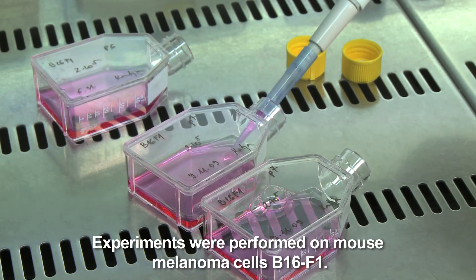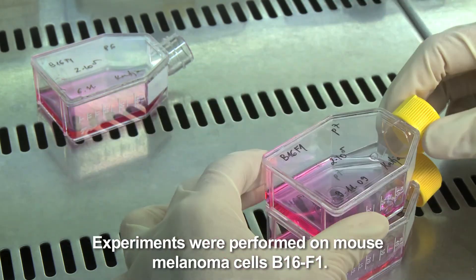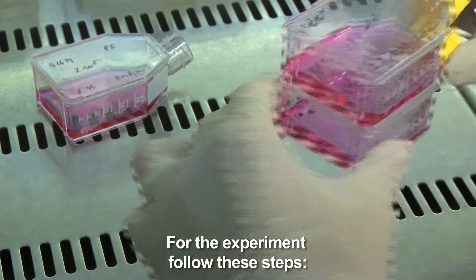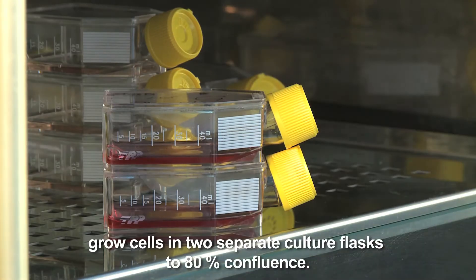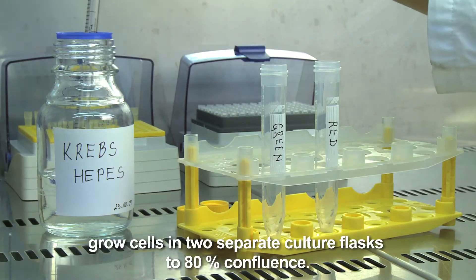Experiments were performed on mouse melanoma cells B16F1. For the experiment, follow these steps. Grow cells in two separate culture flasks to 80% confluence.